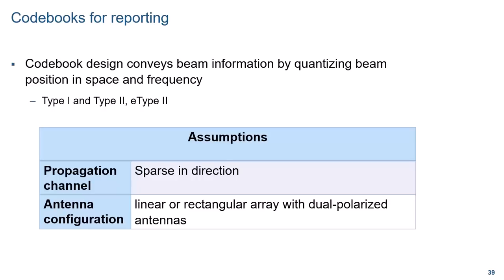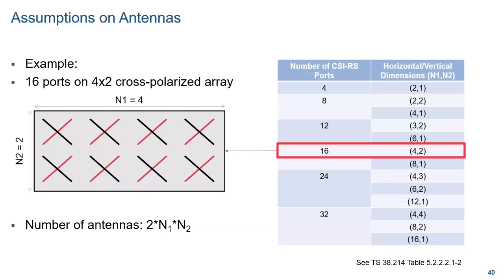An important assumption made in designing the codebook is the type of antenna array. They are assumed to be linear or rectangular arrays, possibly multi-panel, with dual cross-polarized antennas. Looking at tables in the standard, different possible configurations associate a number of CSIRS ports with numbers N1 and N2, corresponding to the form factor of the antenna. For example, 60 antenna ports with N1=4 and N2=2 means the underlying assumption is a 4-by-2 structure. Each antenna location is comprised of two antennas polarized in different directions, so the total number of antennas is 2 × N1 × N2. This cross-polarization will be quite apparent in the structure of the codebooks.